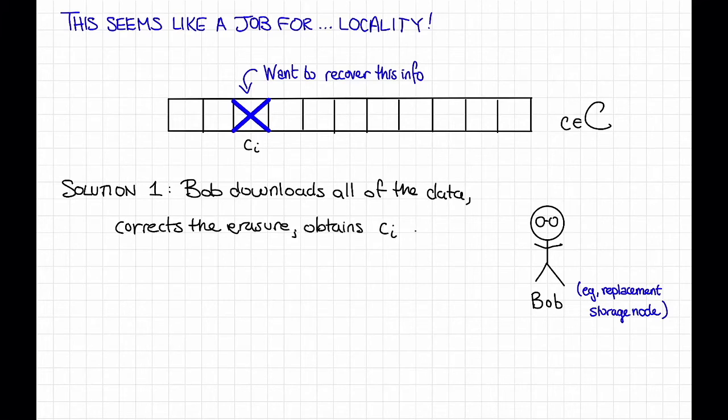The problem with this is that, in the context of distributed storage, that is a lot of communication. Remember that each one of these symbols is stored on a different storage node, and so Bob basically just has to download the entire symbol from all of the different storage nodes. It turns out that in real-life distributed storage systems, communication is often a bottleneck, so we'd like to reduce that.